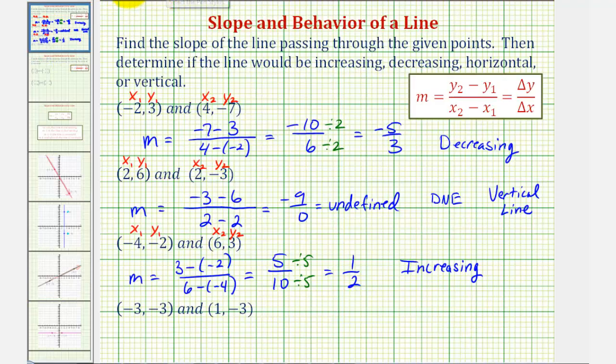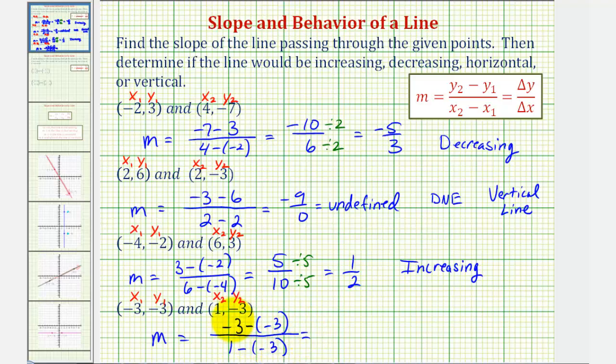Now for our last example, we have negative 3 comma negative 3, and we have 1 comma negative 3. So the slope is going to be equal to y sub 2 minus y sub 1. That's negative 3 minus negative 3 divided by x sub 2 minus x sub 1. That's 1 minus negative 3. So here we have negative 3 plus 3, that's 0, divided by 1 plus 3, that's 4. Well, 0 divided by 4 would be 0.